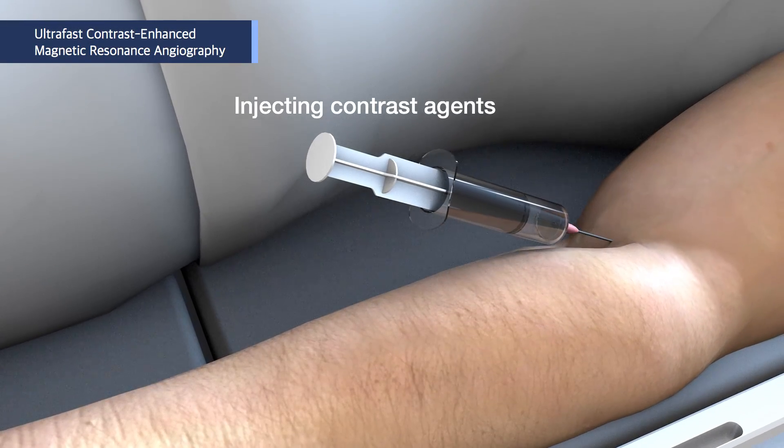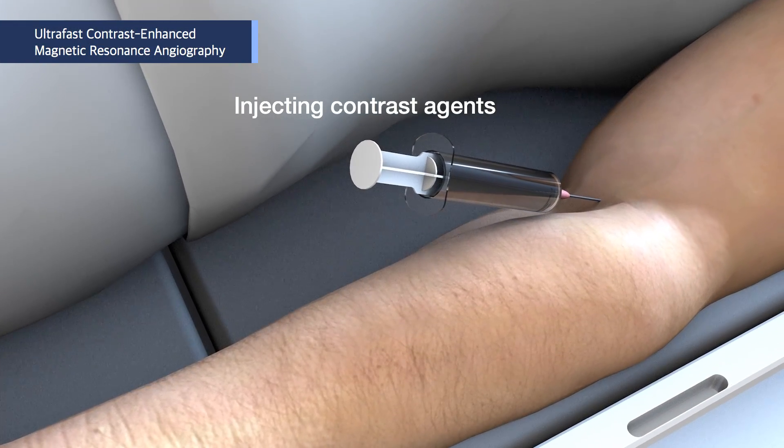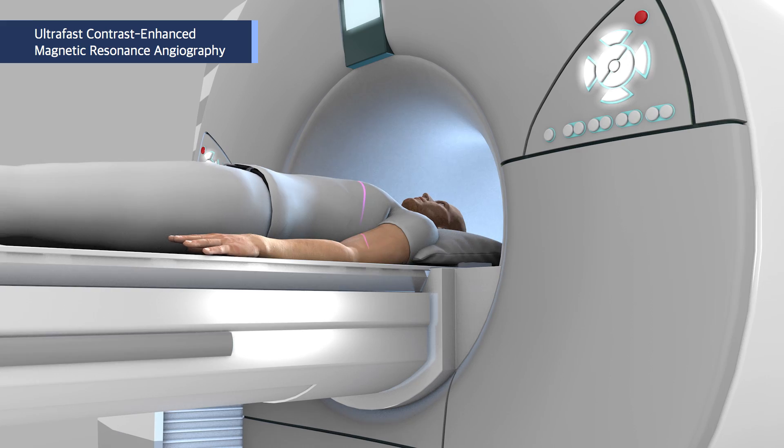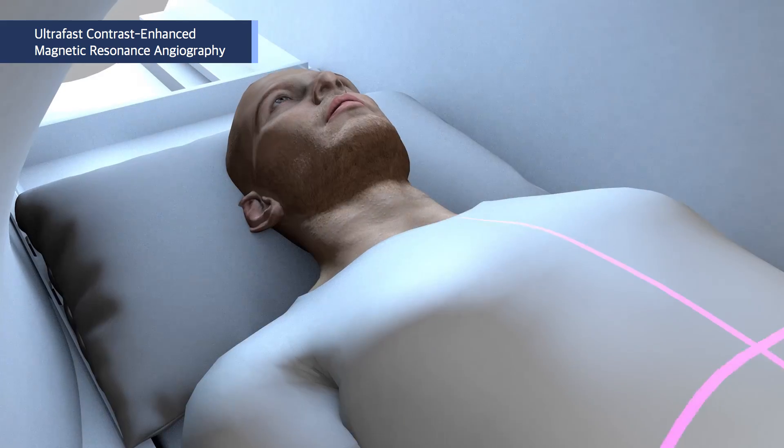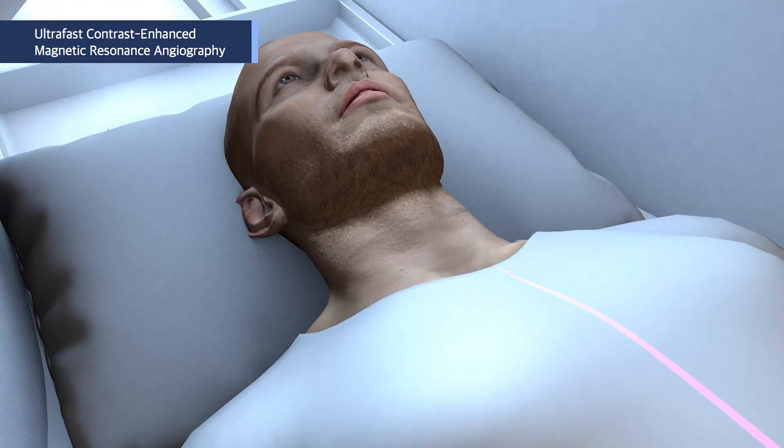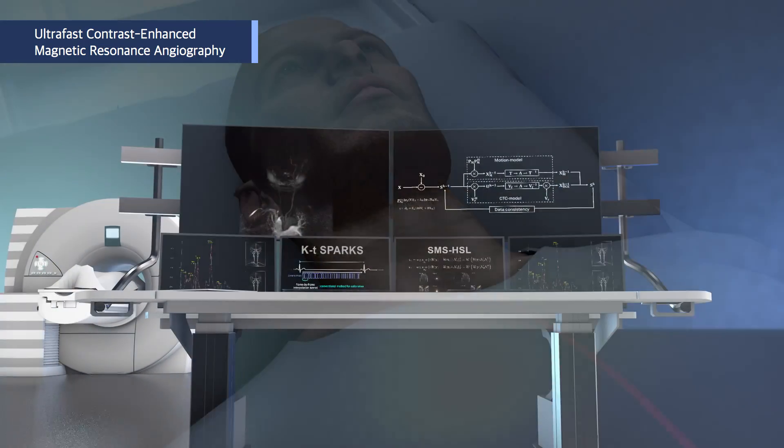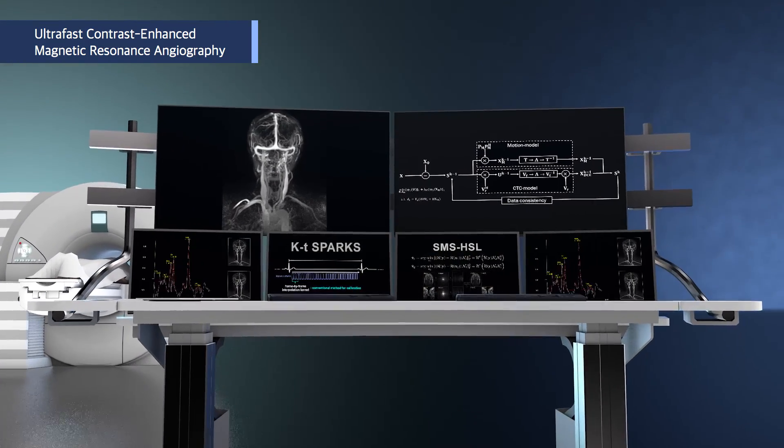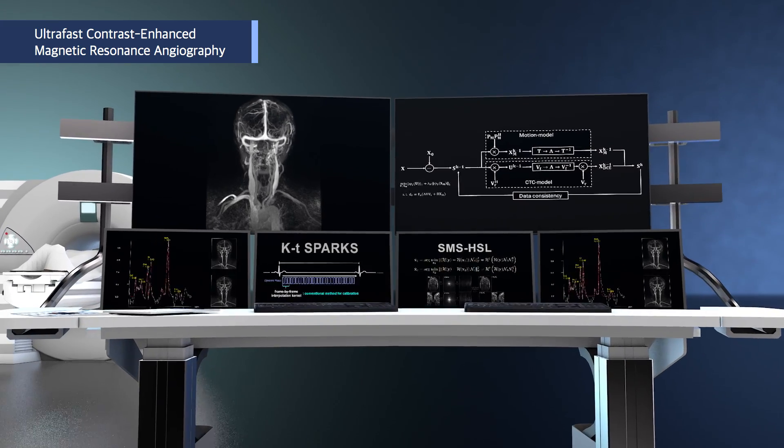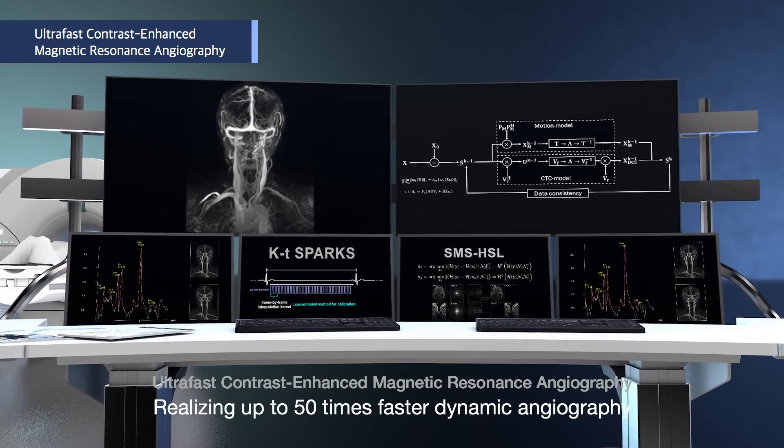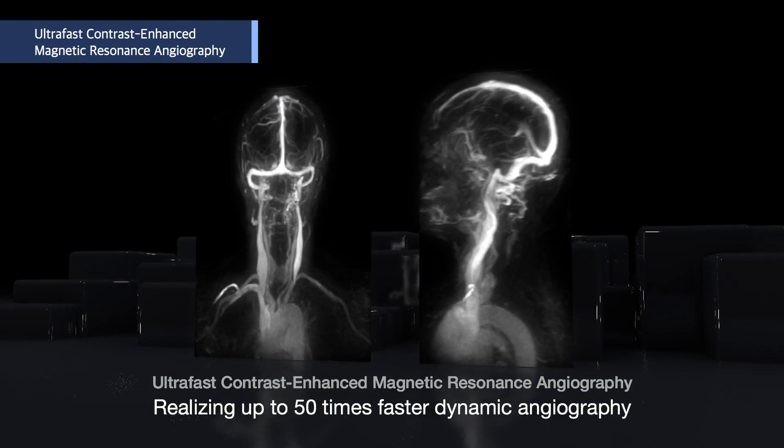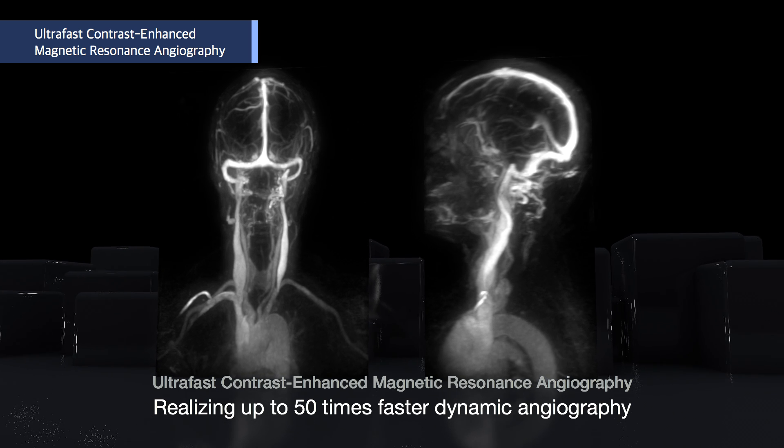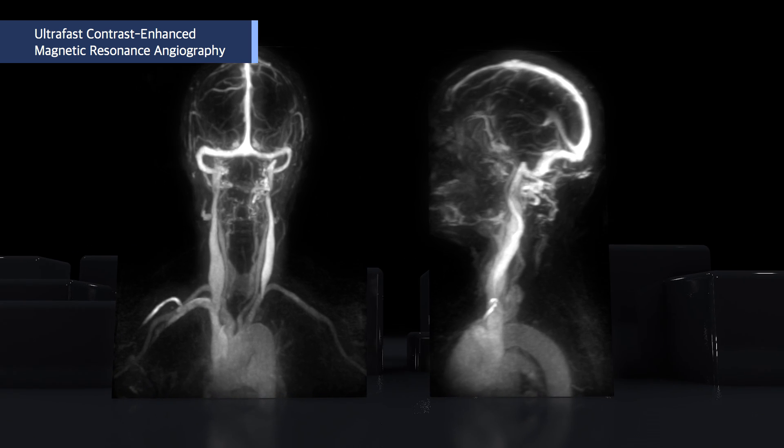In conventional contrast-enhanced dynamic angiography, the inspection takes long and a minor movement of the patient may interfere with identification. Ultrafast contrast-enhanced magnetic resonance angiography added a special algorithm to the key technology explained earlier and realized up to 50 times faster dynamic angiography. Its quality of image is outstanding as well.